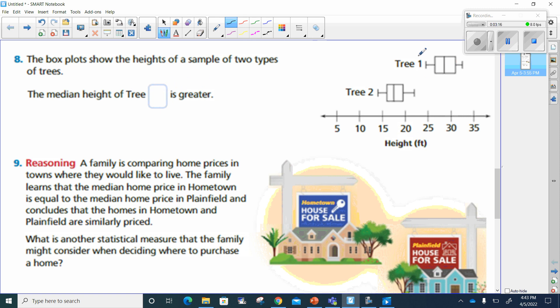Well, the median height of tree number one obviously is greater because tree number one is sitting about right here, which would probably be about 28. If this is going to be five in between, I would say this is about 28. And this one over here for tree two is only at about maybe 17. So we're going to say tree one is greater.